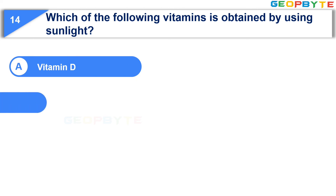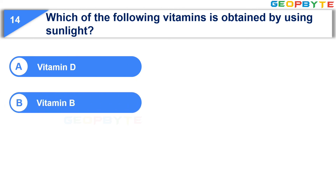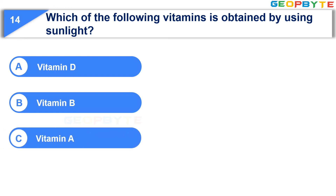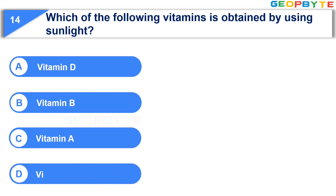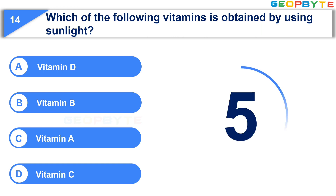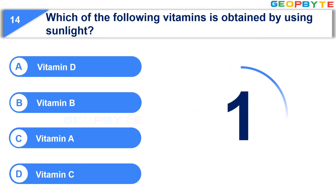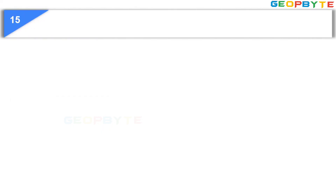The 14th question is: Which of the following vitamins is obtained by using sunlight? Option A: Vitamin D. Option B: Vitamin B. Option C: Vitamin A. Option D: Vitamin C. Your time starts now. Your time is up and the correct answer is Option A: Vitamin D.